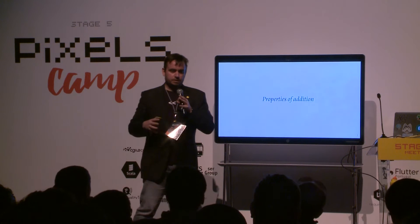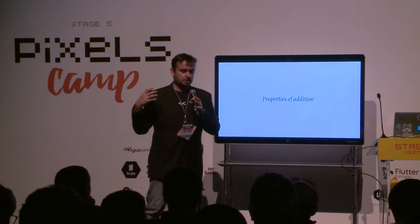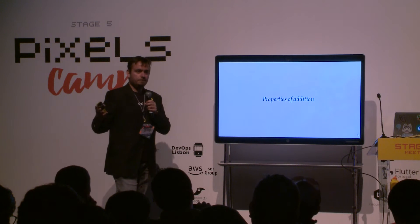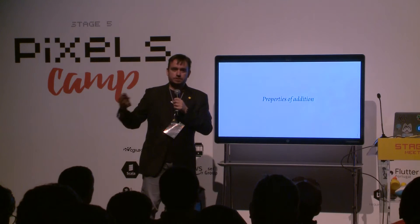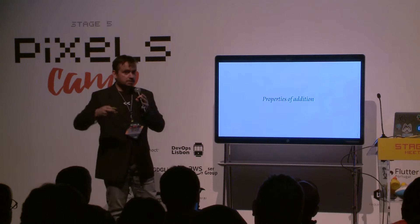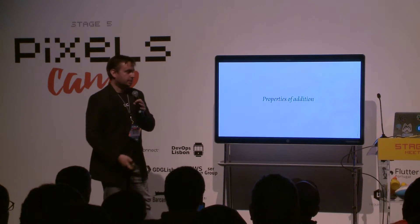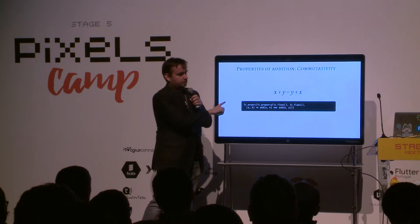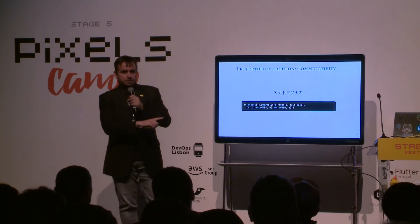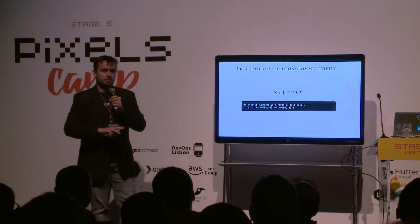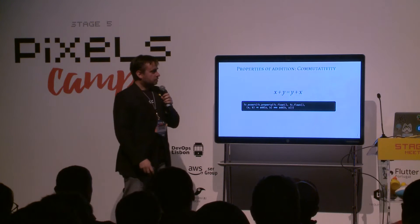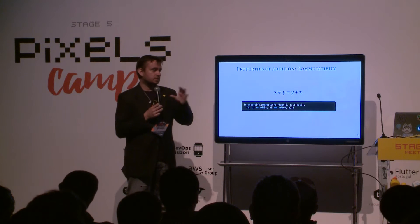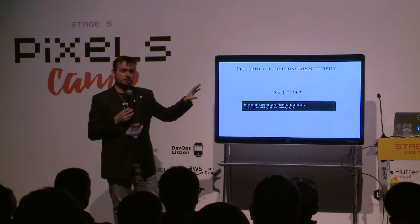You have these generators and you're generating stuff. About a concrete example — I mentioned FizzBuzz, but perhaps one of the easiest to understand is something you probably learned in high school: the properties of addition. You know there's commutativity, associativity, et cetera — these are pretty basic. And these are the same kinds of properties you would test in a property-based testing scenario. These examples are in a property-based testing library called FastCheck, which is a library for JavaScript and TypeScript.